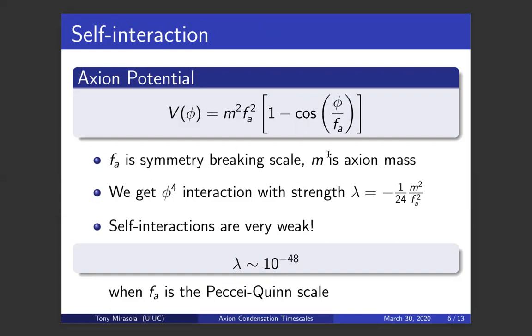Since the axion field is much smaller than the symmetry breaking scales, it's a very weak field. We can really neglect all of the higher order terms. We only have to worry about the quartic interaction. And for other axion-like particles, they have similar potentials and they also get quartic interactions with slightly different coupling constants.